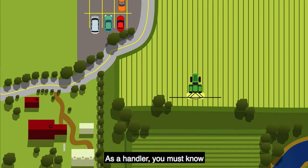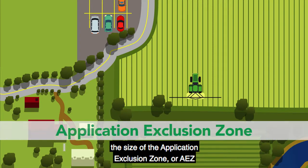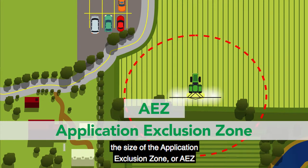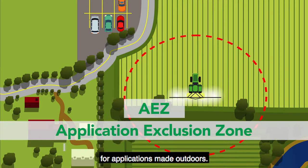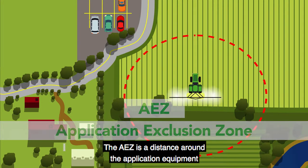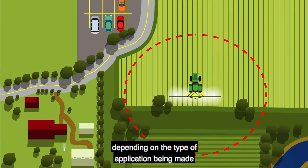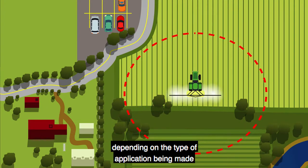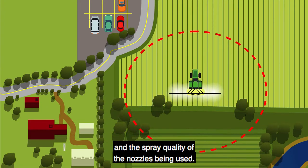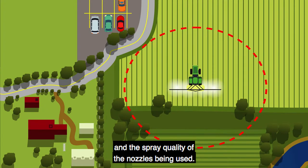As a handler, you must know the size of the Application Exclusion Zone, or AEZ, for applications made outdoors. The AEZ is a distance around the application equipment that varies in size depending on the type of application being made and the spray quality of the nozzles being used.